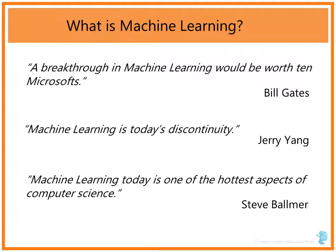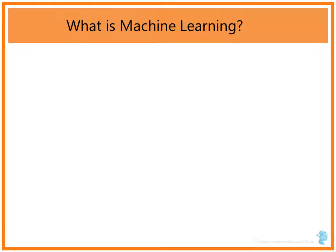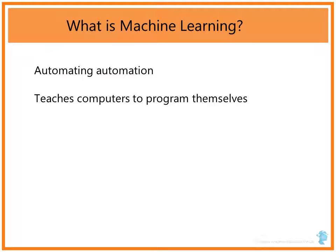According to Steve Bummer, Machine Learning today is one of the hottest aspects of computer science. So what is Machine Learning all about? Machine Learning is about automating automation. Using Machine Learning, we can actually teach computers to program themselves using the data. That is all about Machine Learning.